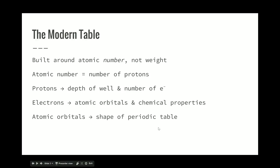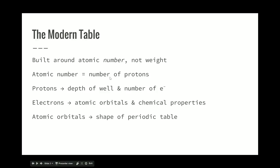The modern periodic table is built around atomic number, not atomic weight. Atomic number is the number of protons. Protons give you the depth of the potential energy well. The electrons will fall down into the electrical potential energy well. The protons provide the depth of the well, and the nature of the electrons - the fact that they have a negative charge, that they have a certain mass, and that only two of them can fit in a certain orbital - is what gives us atomic orbitals and the chemical properties of the elements. Finally, the atomic orbitals and their shapes give us the shape of the periodic table.